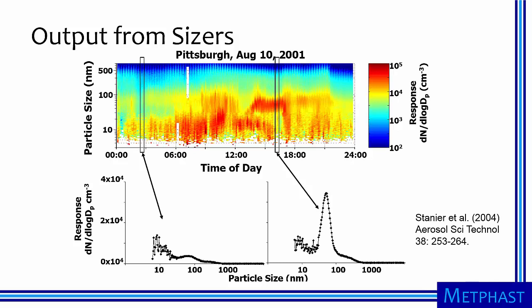Sizers provide a wealth of data. These data shown here are from a study of nanoparticles in the city of Pittsburgh. In the top plot, a color scale is used to indicate particle number concentration from low values in blue to high values in red. Particle size is shown on the y-axis and time of day on the x-axis. Each slice of the data represents a size distribution measured at a particular time.